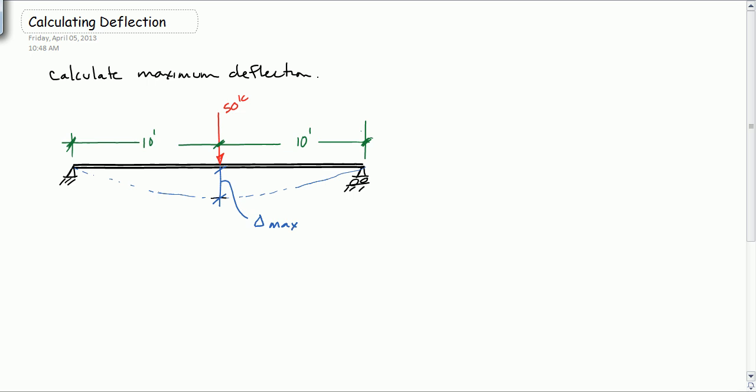We would go to our tables and we would find the equation for this. Delta max is equal to PL cubed over 48EI. So this equation only applies to this particular loading condition, a single point load right in the middle. If the point load wasn't in the middle, if there were more than one point loads, we would have a different equation. So don't try to apply this equation to other conditions.